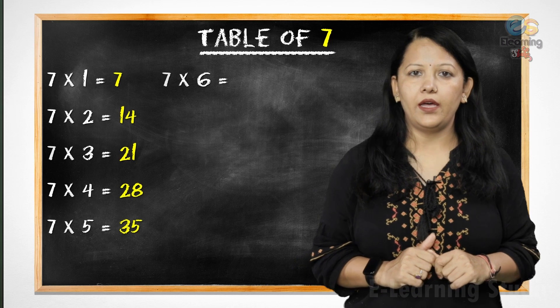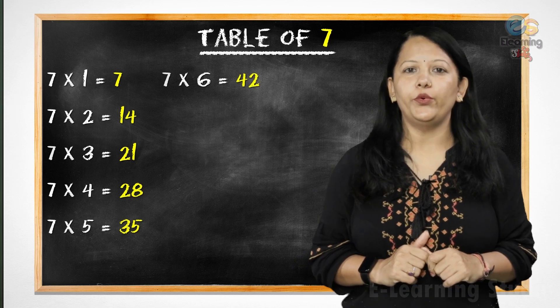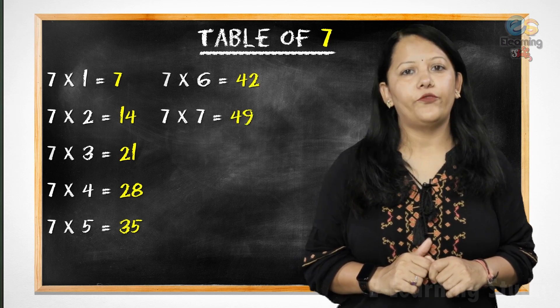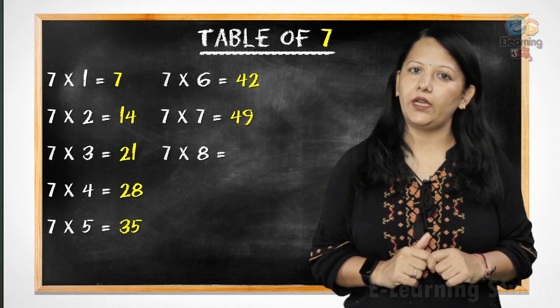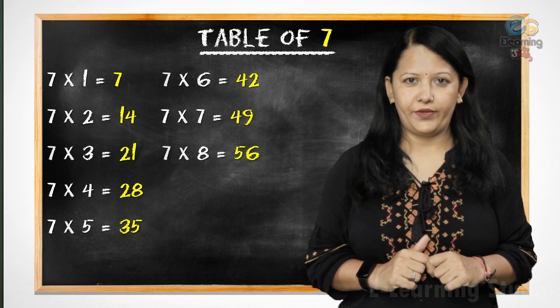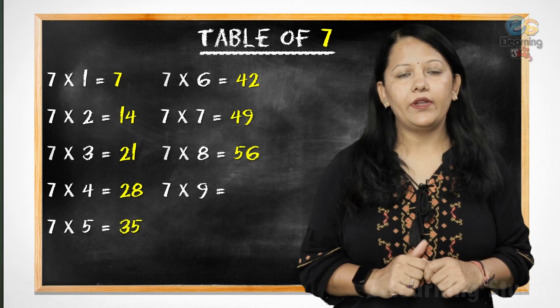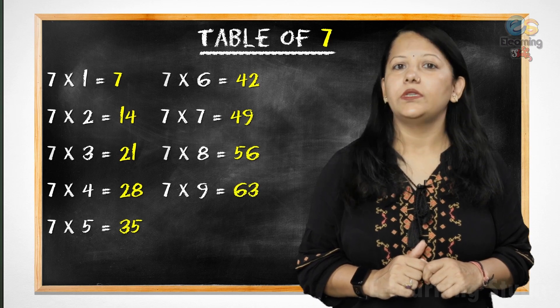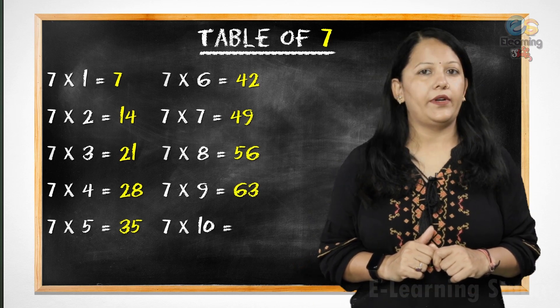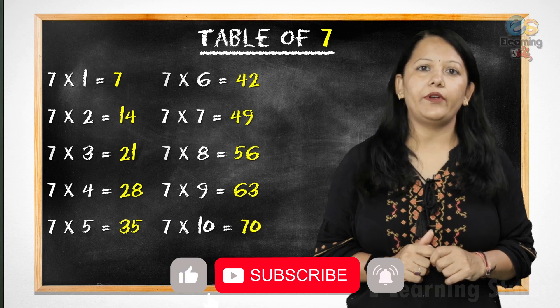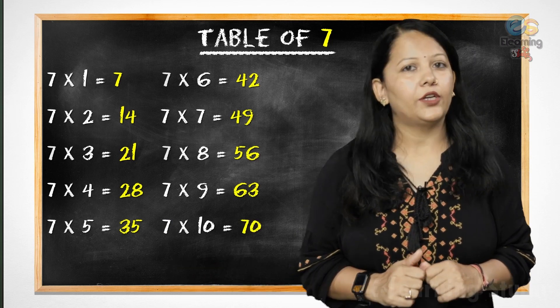7 sixes are 42, 7 sevens are 49, 7 eights are 56, 7 nines are 63, 7 tens are 70. Very good.